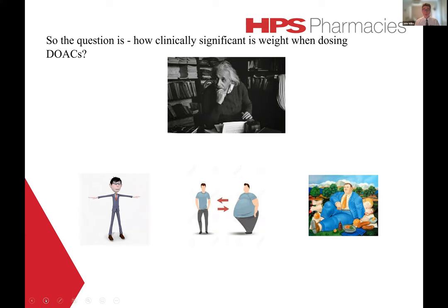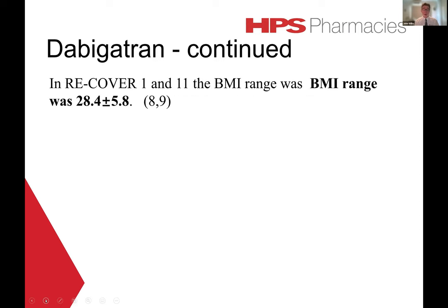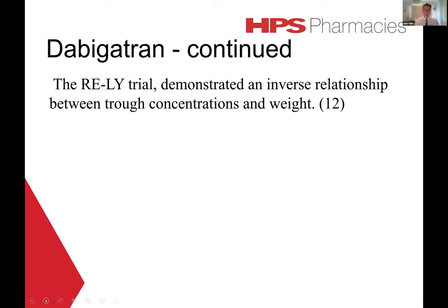How clinically significant is weight when dosing with DOACs? For dabigatran, most of the data comes from extrapolations from trials such as RELY, RECOVER 1 and 2, REMEDY, and RESONATE. In RECOVER 1 and 2, the BMI range was 28.4 plus or minus 5.8 kilograms per meter squared — a BMI range in obesity class two, which is not the highest level of obesity and hence provides no direct beneficial evidence. Nonetheless, a subgroup analysis of dabigatran peak and trough concentrations within the RELY trial demonstrated an inverse relationship between trough concentrations and weight.